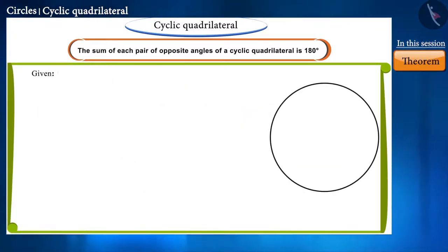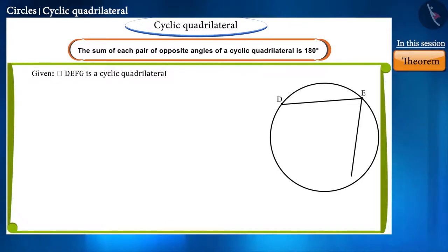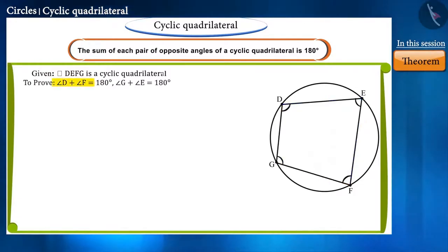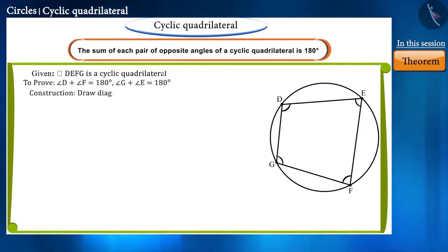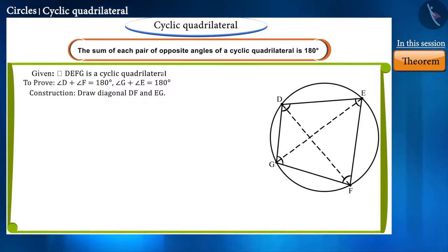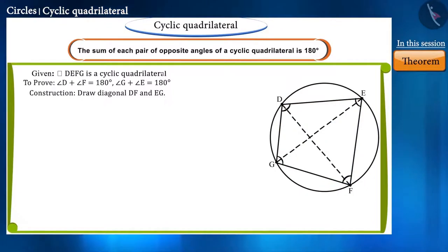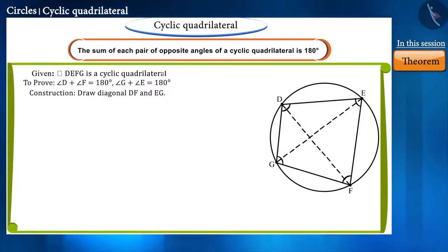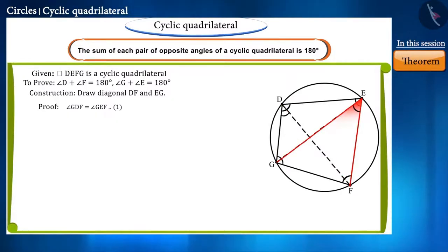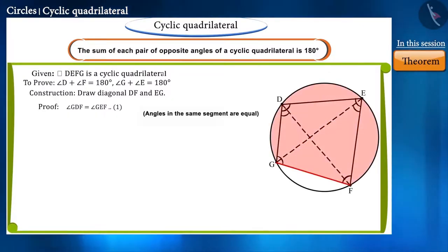According to the theorem, we draw cyclic quadrilateral DEFG. We have to prove that the sum of each pair of opposite angles is 180 degrees. We draw diagonal DF and diagonal EG, giving us four triangles within the quadrilateral. Angles GDF and GEF are angles formed in the same segment, so they will be equal.